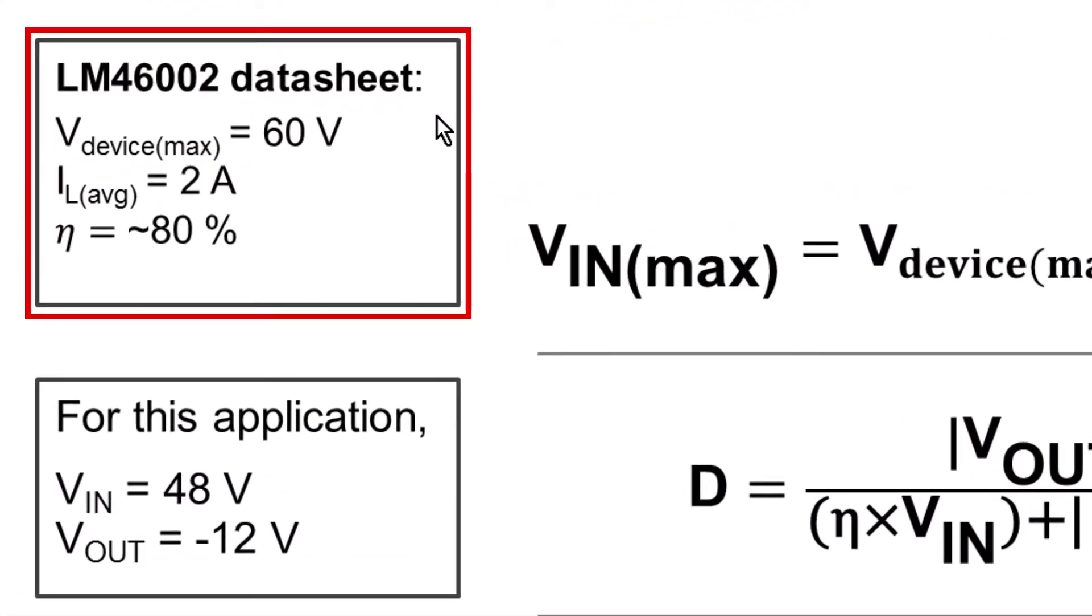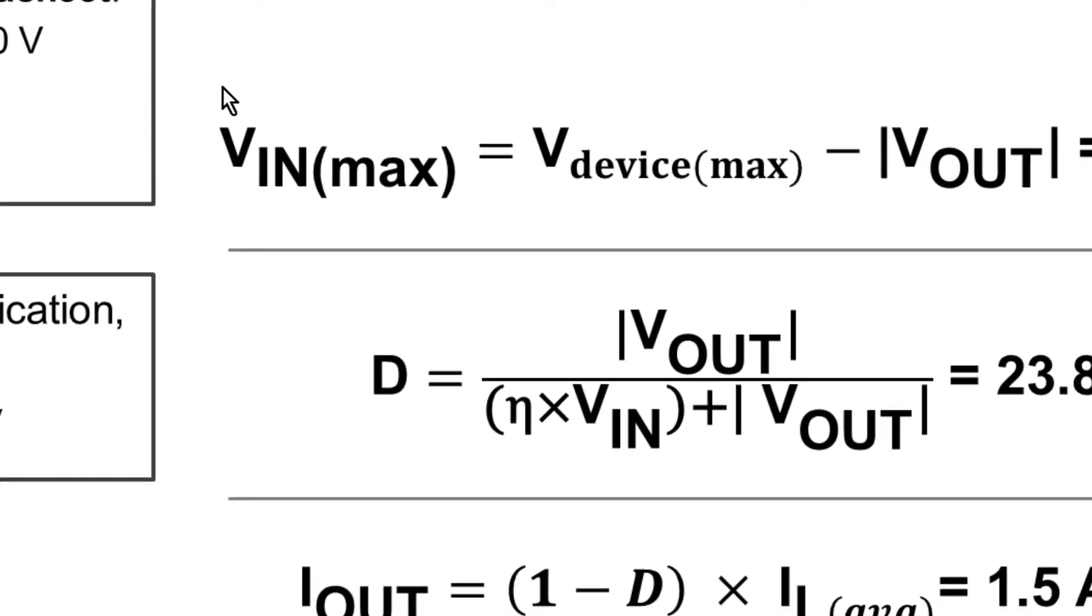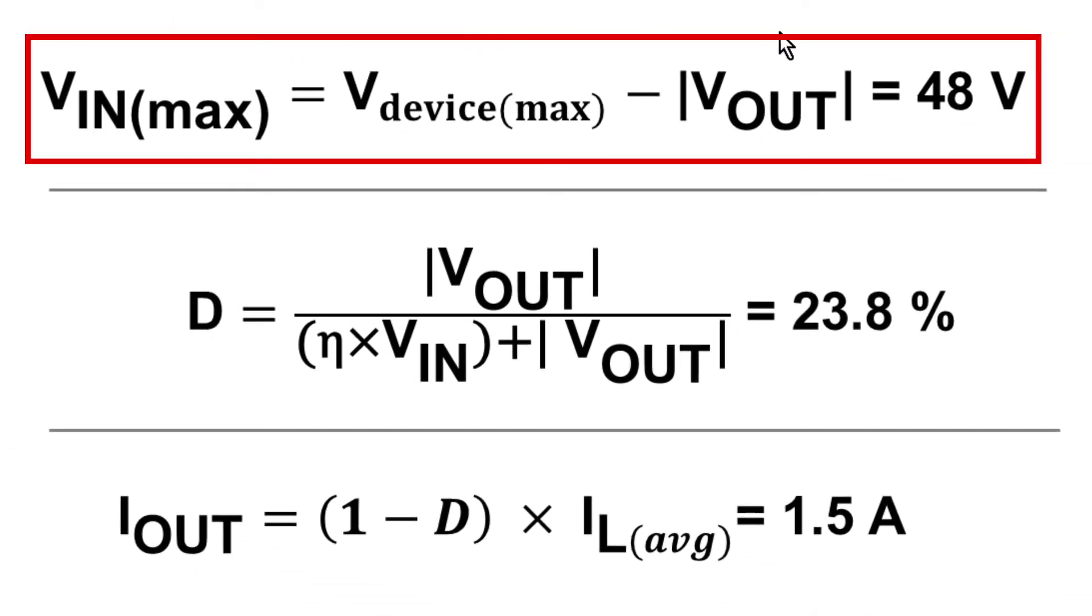The LM46002 datasheet says the maximum operating voltage is 60 volts. The maximum average inductor current is 2 amps. Using this equation, we can subtract the output voltage from the maximum operating voltage and get 48 volts. 48 volts is also a very popular bus operating rail in telecom applications.